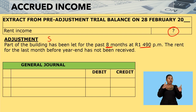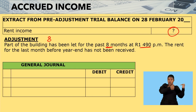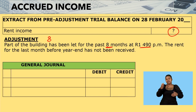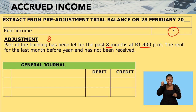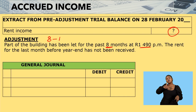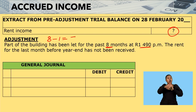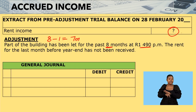The tenant has been in the building for eight months. However, we have a challenge — the rent for the last month, that is one month before the year end, has not yet been received. That means they have paid us for eight minus one, which gives you seven months. They have paid us rent for seven months, which means I can get the amount shown by the question mark.